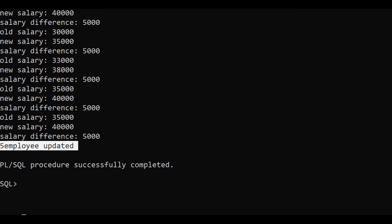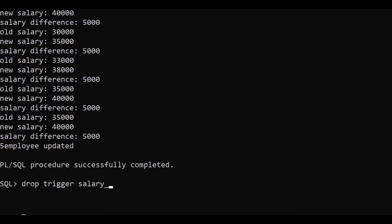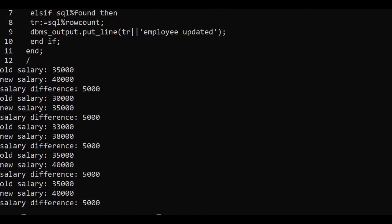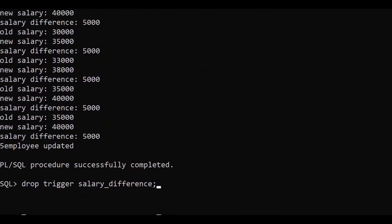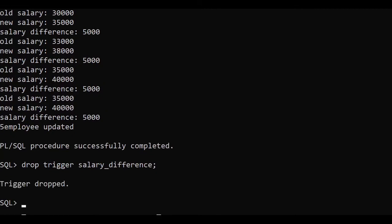Now the second part: I'm going to show you the IF-ELSE statement in a trigger — the same IF-ELSE you've used in C, Java, and Python. Before creating that trigger, let me drop the previous trigger. The query to drop a trigger is: DROP TRIGGER salary_difference. The moment I execute this, the trigger is dropped — no more trigger exists on table imp.